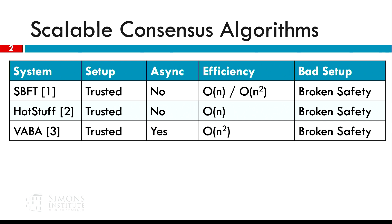All these protocols have a trusted setup assumption, which means that there needs to be a dealer at the beginning of the protocol who is going to disperse some cryptographic material to everyone else — in order for those protocols to be efficient, and actually for VABA to even work. Which means that if your trusted assumption breaks, if that dealer gives the cryptographic material to the adversary, then the protocol is completely broken.